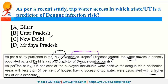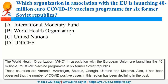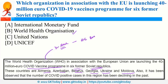The European Union in association with the World Health Organization is launching a 40 million euro COVID-19 vaccine program for six former Soviet republics: Armenia, Azerbaijan, Belarus, Georgia, Ukraine, and Moldova. WHO was recently in news because Dr. Harsh Vardhan presided over the executive board of WHO, and also because the USA decided to rejoin WHO.